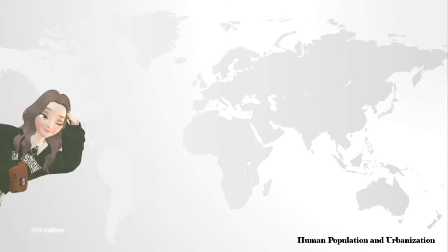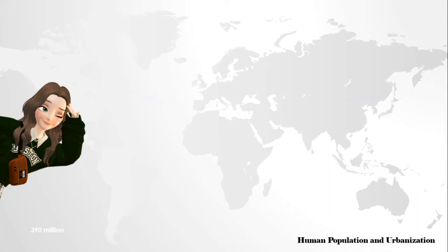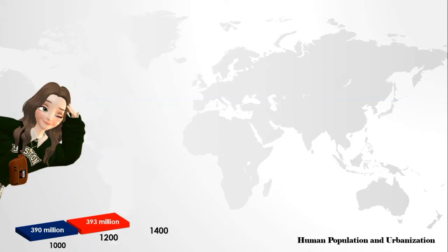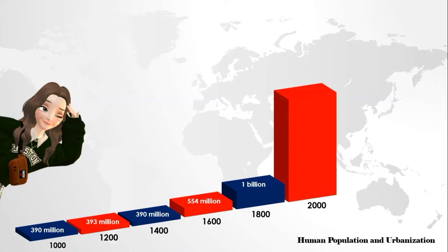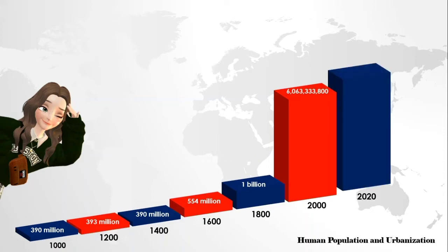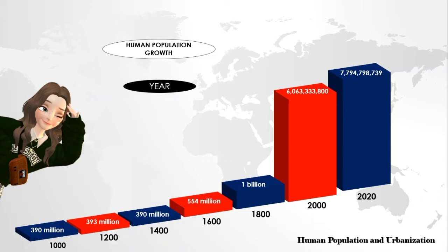In this slide, I am going to show you the global human population from the year 1000 to 2020 using this chart. Human population was 390 million in the year 1000. In 1200, 393 million people were living. In 1400, there were 390 million people, which decreased by 3 million. In 1600, it surpassed 544 million. In 1900, the human population grew to 1 billion. In 2000, the world's population reached 6,063,338,800 individuals. In 2020, the total population was 7,794,798,739. Because of the industrial revolution, human population growth has increased tremendously and continues to do so.